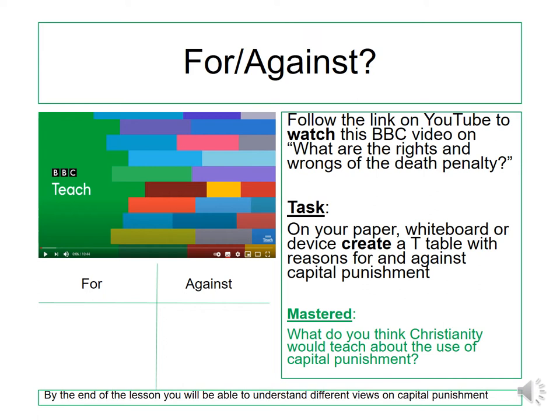I want you to open up the link on class charts and watch this BBC video on what are the rights and wrongs of the death penalty. Your task while you are watching this video is to create a T-table. On the left hand side I want you to come up with reasons for and against capital punishment — you may have your own views, and I want you to use views from the video as well.